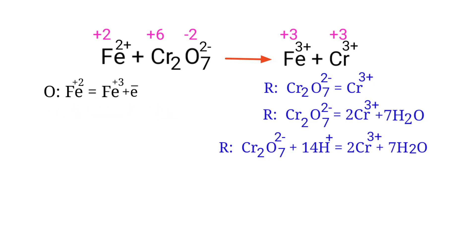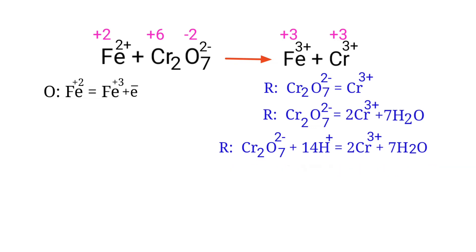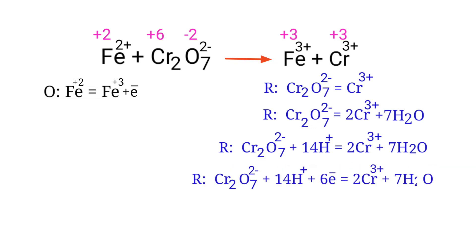Now we balance the charges in the reduction half-reaction. The electron gain must be equivalent to the electron lost. Both sides are not equal, so we add 6 electrons to the left side to make it equal to +6. Now the charges are balanced in the reduction half-reaction.